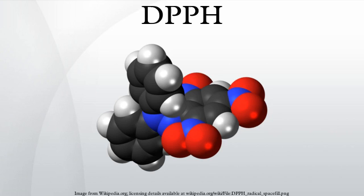DPPH is a well-known radical and a trap for other radicals. Therefore, rate reduction of a chemical reaction upon addition of DPPH is used as an indicator of the radical nature of that reaction.